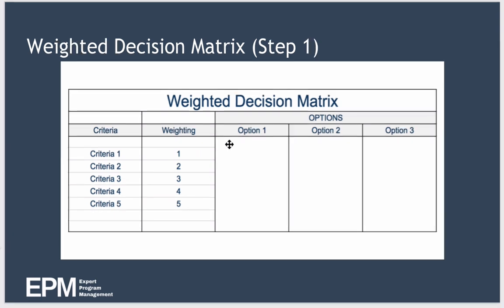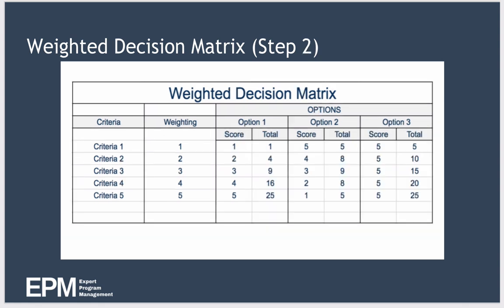Just as before, you list the options under consideration across the top row of the table. The next step is under each option we create two rows. One to score the criteria for that option and another to show the total score taking into account the weighting. So this is basically this score here multiplied by the weighting. So one times one gives you one, four times four gives you 16, etc.